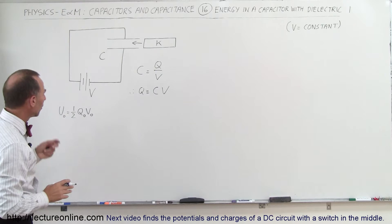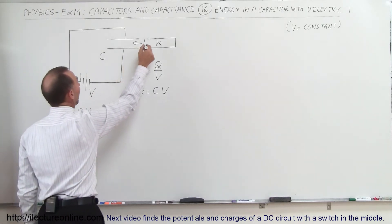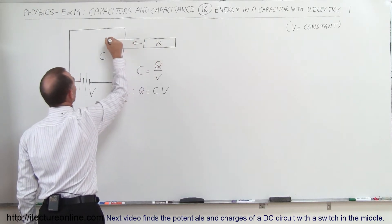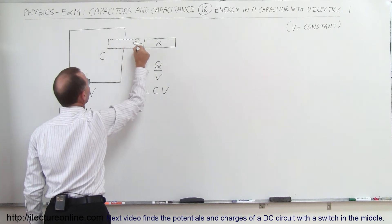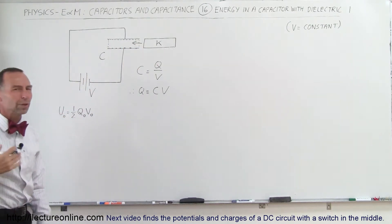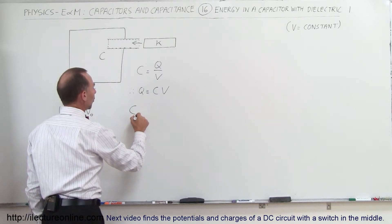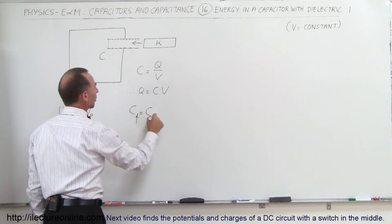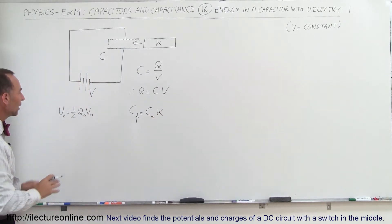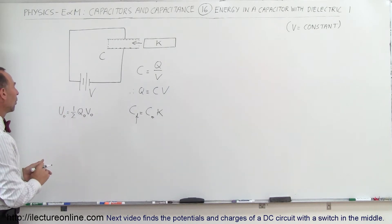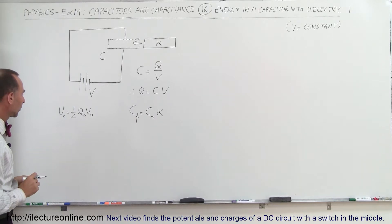So we now know what the energy is in the capacitor before we insert the dielectric. What happens when the dielectric is pushed into the capacitor and now occupies the space previously occupied by air? We already know that the capacitance will increase by the factor K, so the new capacitance C_final equals the initial capacitance times the dielectric constant. We saw that in a previous video.